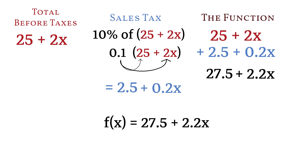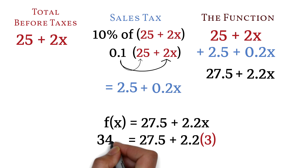With this function, we now have a formula that can be used to solve for the amount for any number of games. We can use this to solve question 8. In question 8 we had 3 games, so we replace x with 3 and compute to get $34.10 as expected.